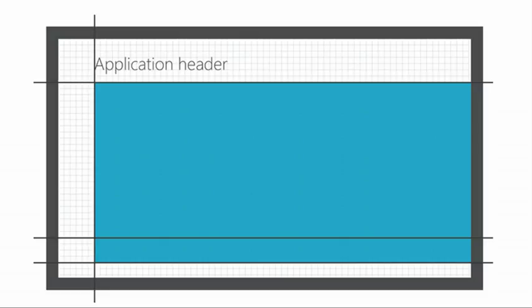This is a summary of the Metro grid: five units from the top of the screen and from the left, five units to the bottom of the header, and seven units to the content. You can see how the Metro units apply to the Metro screen. If you've used Windows 8 at all, they all look very much like this — because they're on grid.